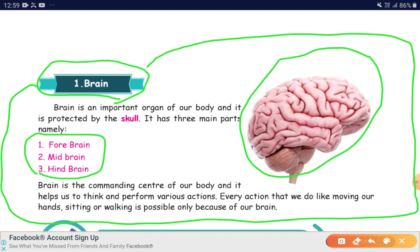Brain is the commanding center of our body. Brain commands and it helps us to think and perform various actions. Every action that we do, like moving our hands, sitting or walking, is possible only because of our brain — because the brain gives the command.